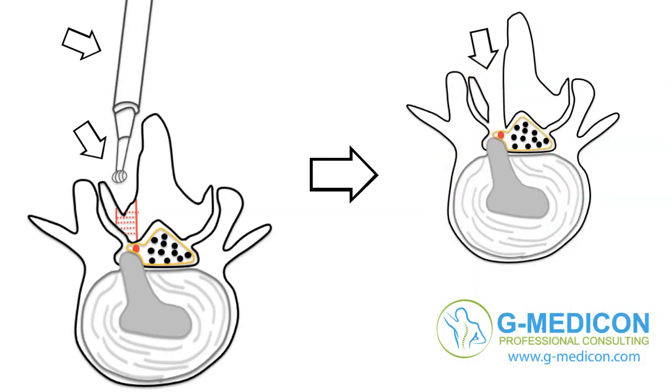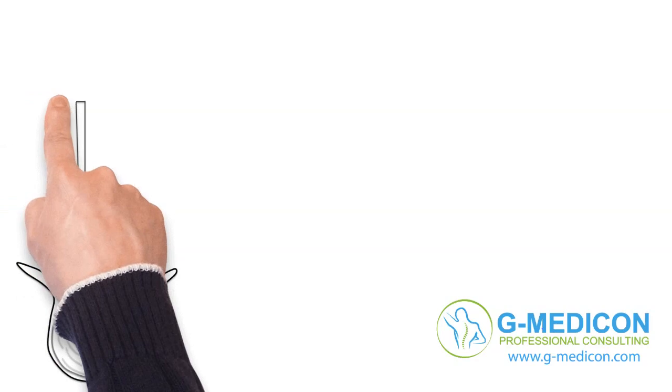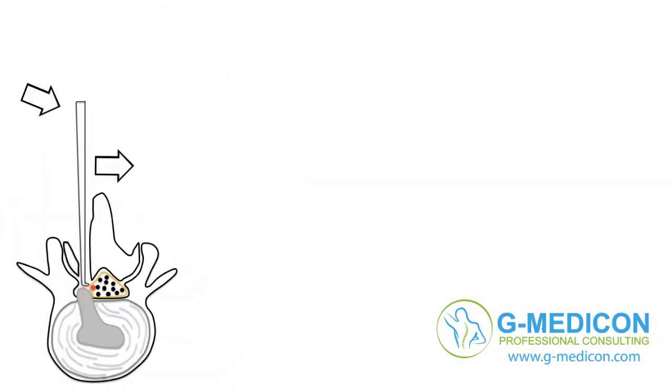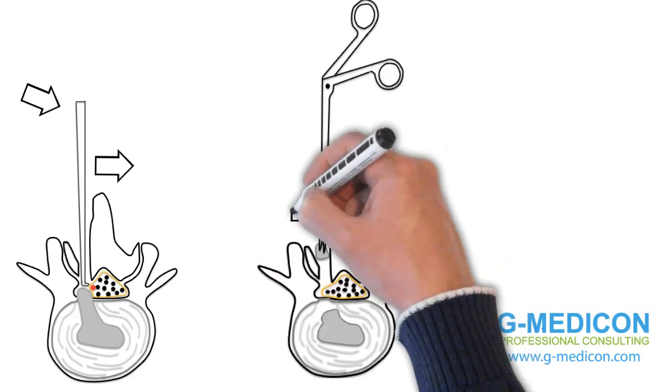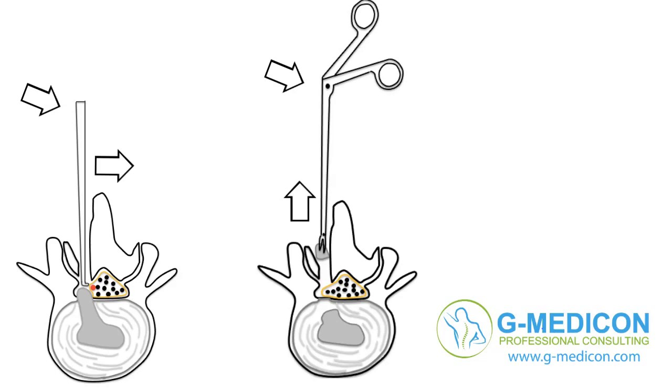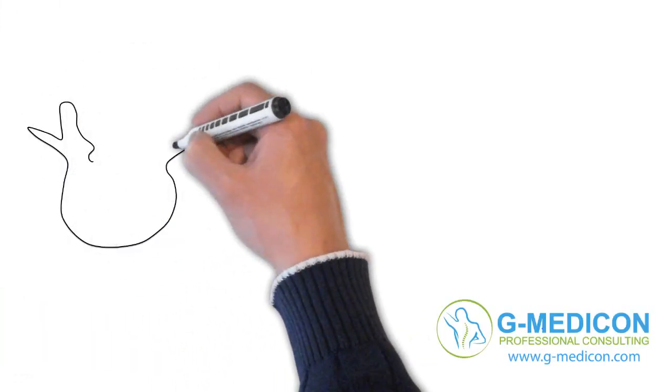The dura is mobilized with a retractor towards the center of the spinal canal to expose the herniated fragment. The herniated fragment is then removed with grasping forceps to release the nerves.